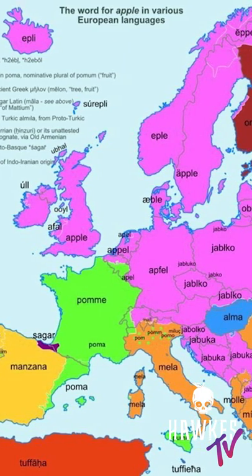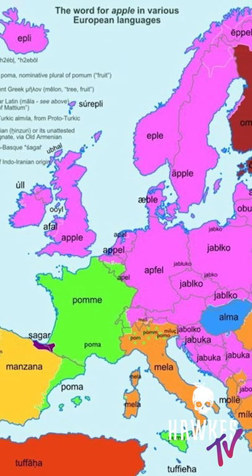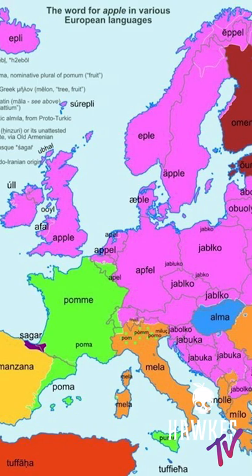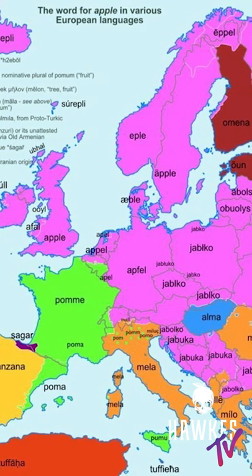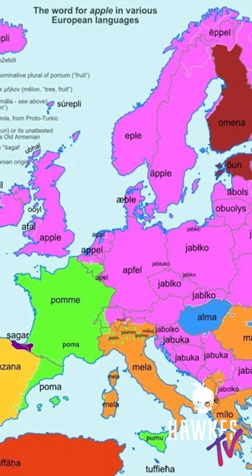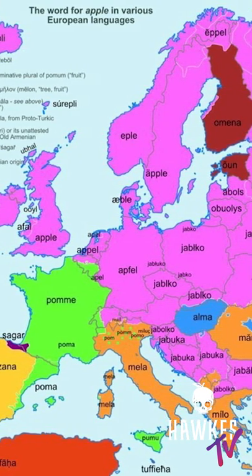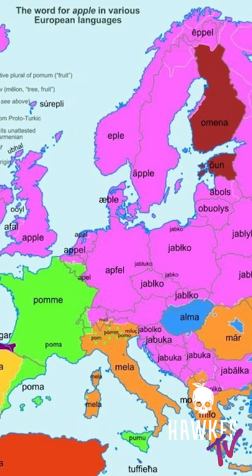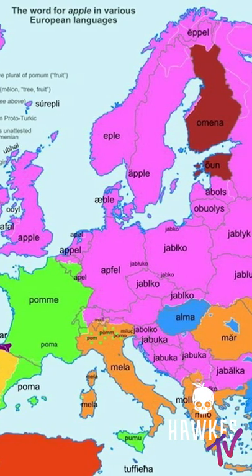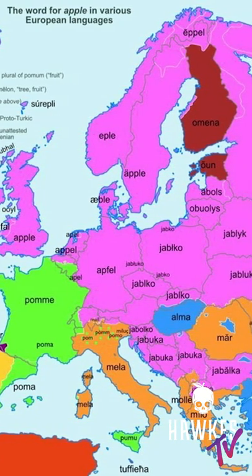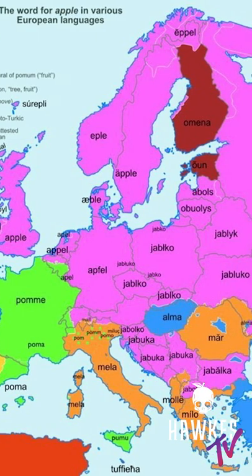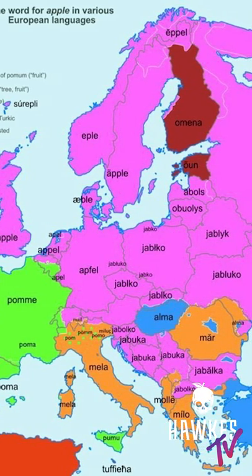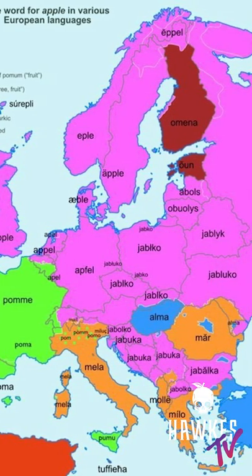What's even more interesting is that based on the etymology among the different populations of the world, the word apple is used or derived to describe a fruit generically — or 'the fruit' — demonstrating once again the importance of the apple everywhere, and especially in areas where it can grow.